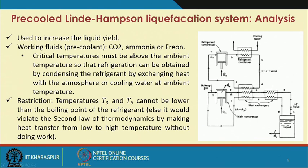Again some work is done in the auxiliary system. One more thing to note is that some amount of liquid is withdrawn — that is about ṁf. The resultant mass flow rate of vapor will be the total flow rate ṁ minus ṁf. This ṁf will have to be supplied by putting in makeup gas. That is how we are running this pre-cooled Linde-Hampson liquefaction system.